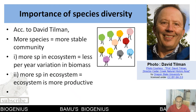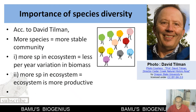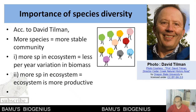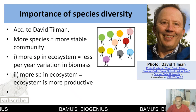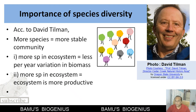In these plots, different colored trees represent different species. With more species in an ecosystem, there is very little variation in biomass — the biomass remains more or less constant. Another conclusion of David Tillman's research was that if more species are present in an ecosystem, that ecosystem is also more productive.